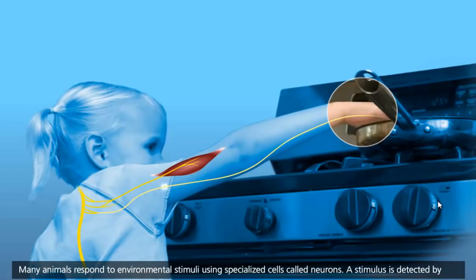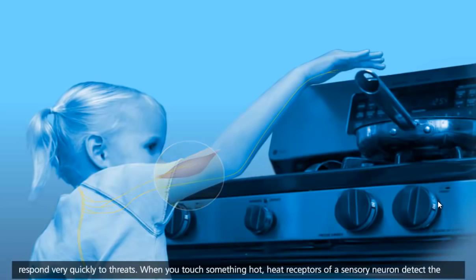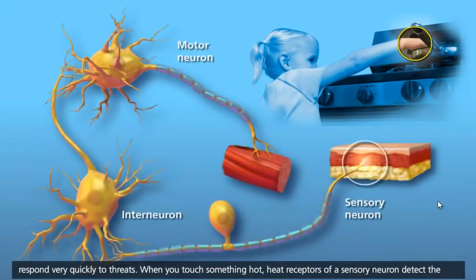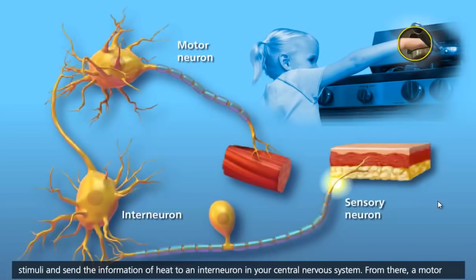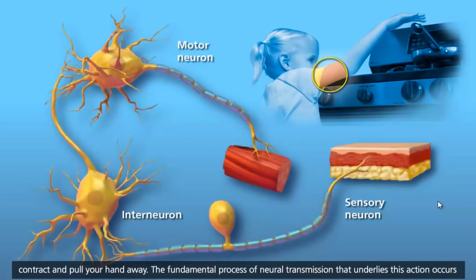A stimulus is detected by sensory receptors and the body responds through motor effectors. These cells working together allow you to respond very quickly to threats. When you touch something hot, heat receptors of a sensory neuron detect the stimuli and send the information of heat to an interneuron in your central nervous system. From there, a motor neuron sends a response from your central nervous system to the skeletal muscles in your arm, causing them to contract and pull your hand away.